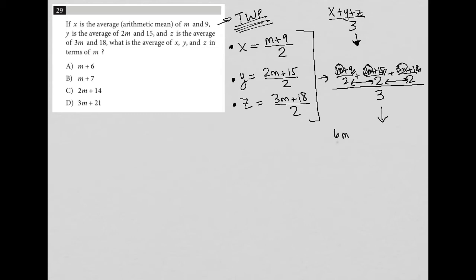what I end up with is 6m plus 42 over 2, all over 3. This 2 here can simplify this top fraction, because 2 goes into all of these things, leading me to 3m plus 21 over 3. And then 3 goes into both 3 and 21, so I can simplify or reduce this fraction further. And what I'm left with is m plus 7, which means the correct answer must be b. So that's one way to do it.